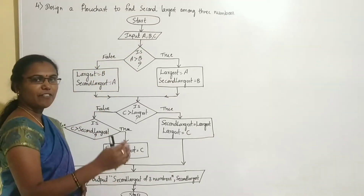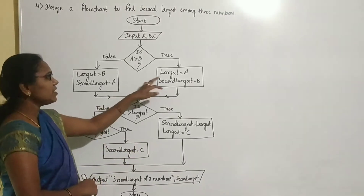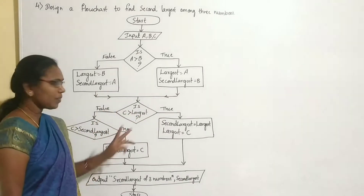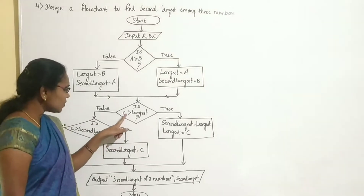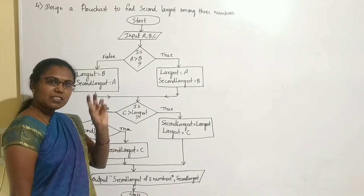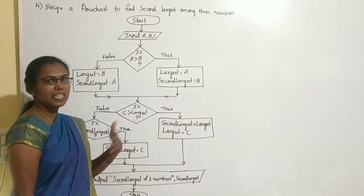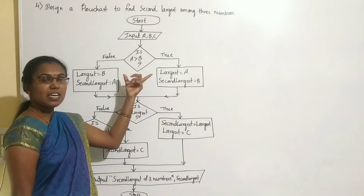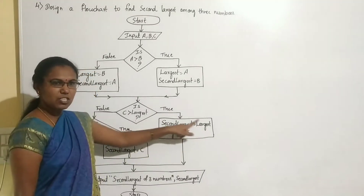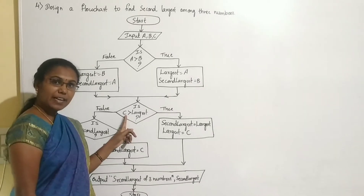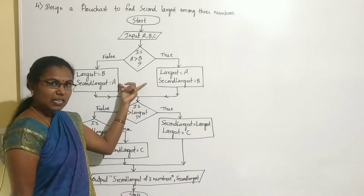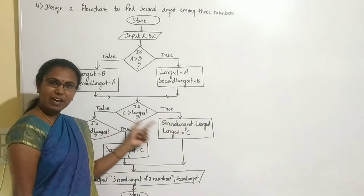But the problem asks for the second largest among three numbers, so we take the current largest value and compare it with the third number C. If C is greater than largest, then the current largest is assigned to second largest first, and then C is assigned to largest.